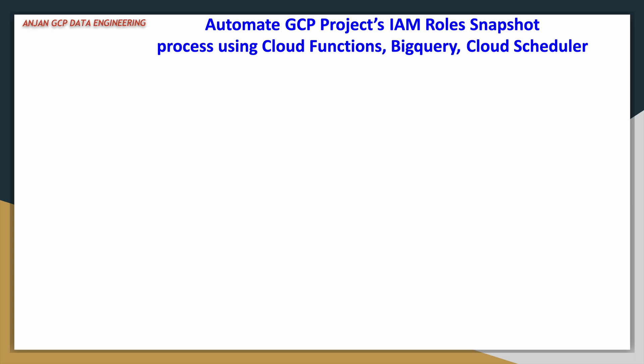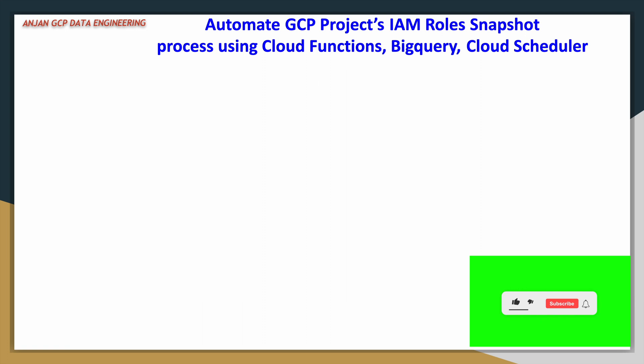Welcome to Anjan GCP Data Engineering. In this video we are going to see how to automate snapshotting or backing up data of a specific Google Cloud project's IAM roles and permissions. We will use Python APIs from IAM Python client libraries, Cloud Functions as our execution environment to add snapshot time, BigQuery to store the snapshots, and Cloud Scheduler to schedule the entire process.